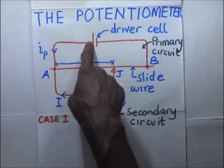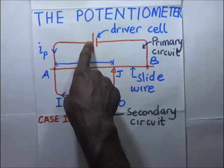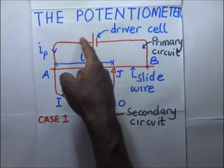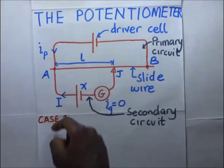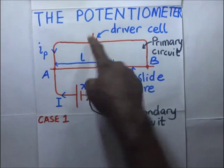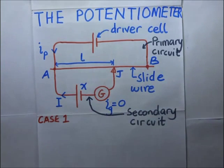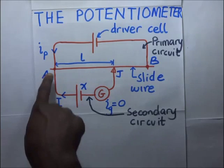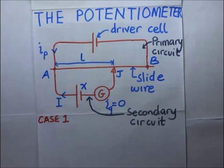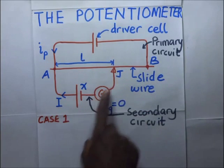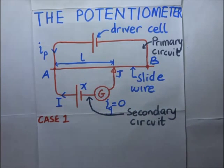The positive terminal of a cell has higher potential and the negative terminal has lower potential. Current always flows from higher potential towards lower potential. So the two points having higher potentials should always be connected at the same end, at point A. All higher potential points of the primary and secondary circuits must be connected together at point A, and the lower potential points must be connected together at point J, where the jockey meets the slide wire.